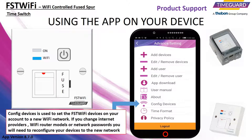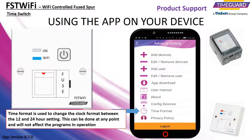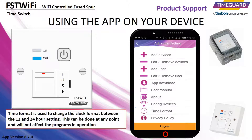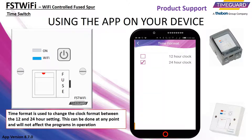Config devices is used to set the devices to a new Wi-Fi network. If you change internet providers, you will need to reconfigure your devices to keep them in sync. Time format is used to change the clock format between the 12 and 24 hour setting. This can be done at any point and will not affect the programs in operation.